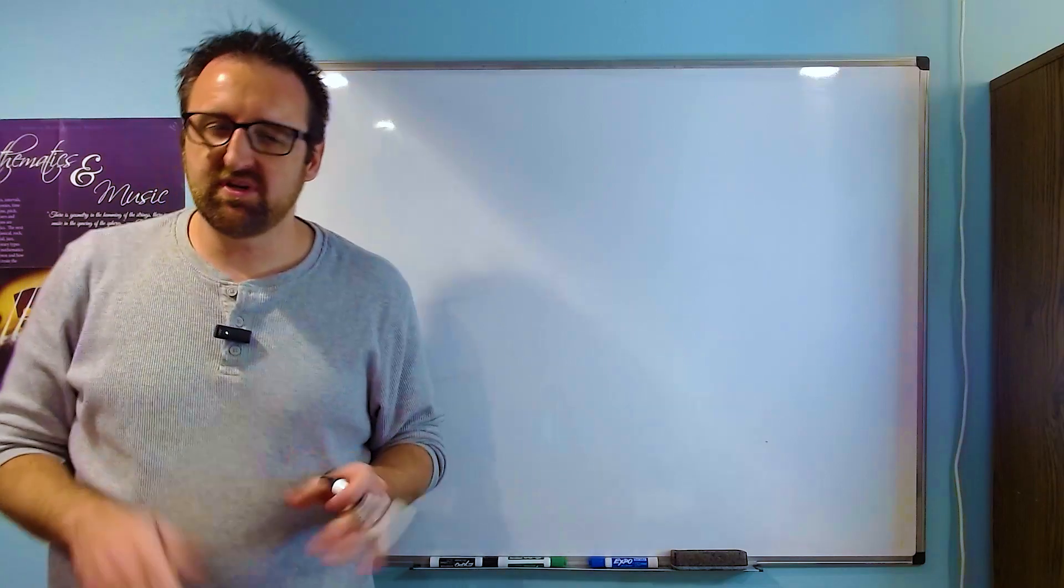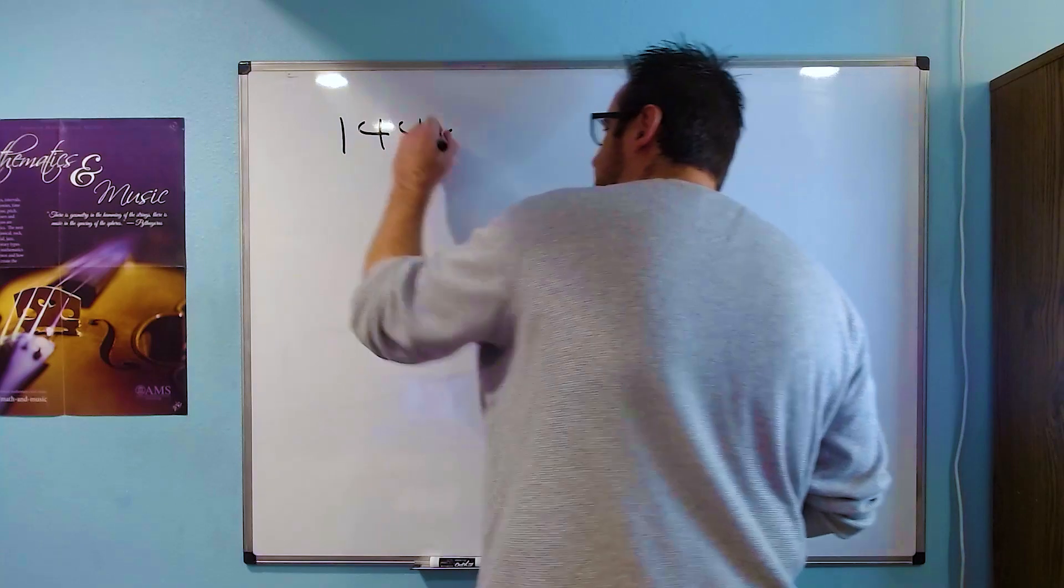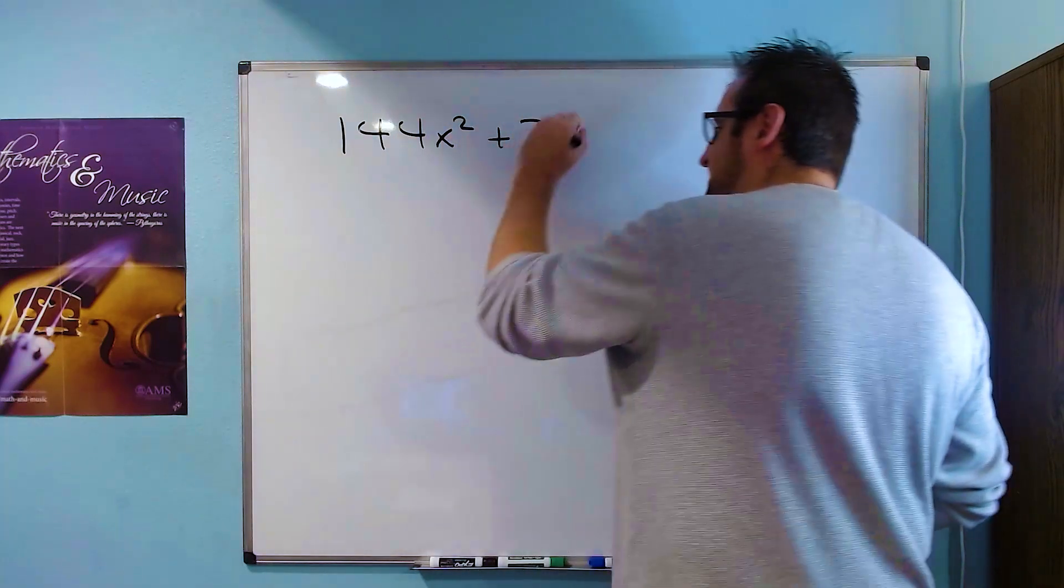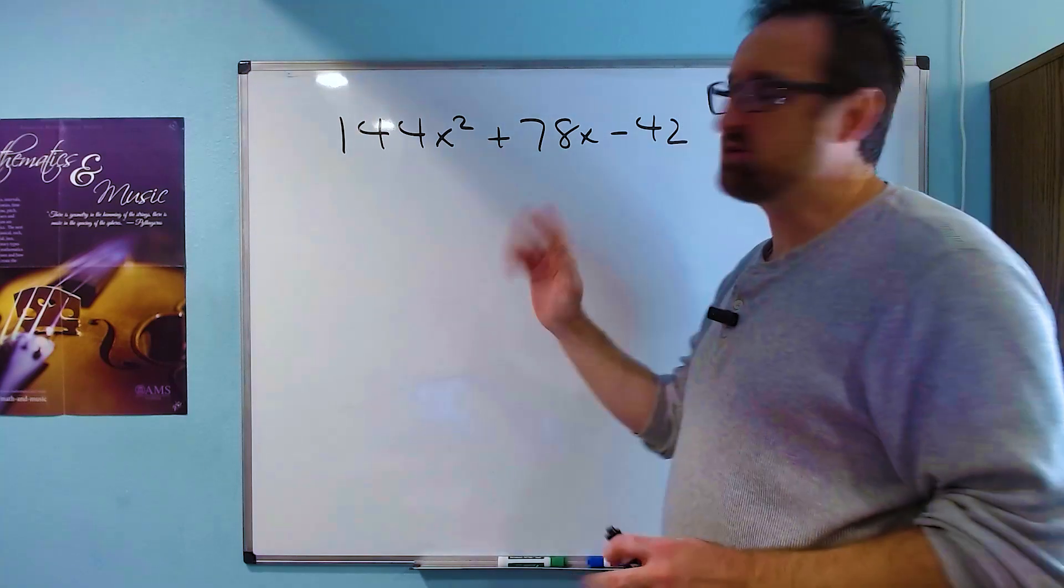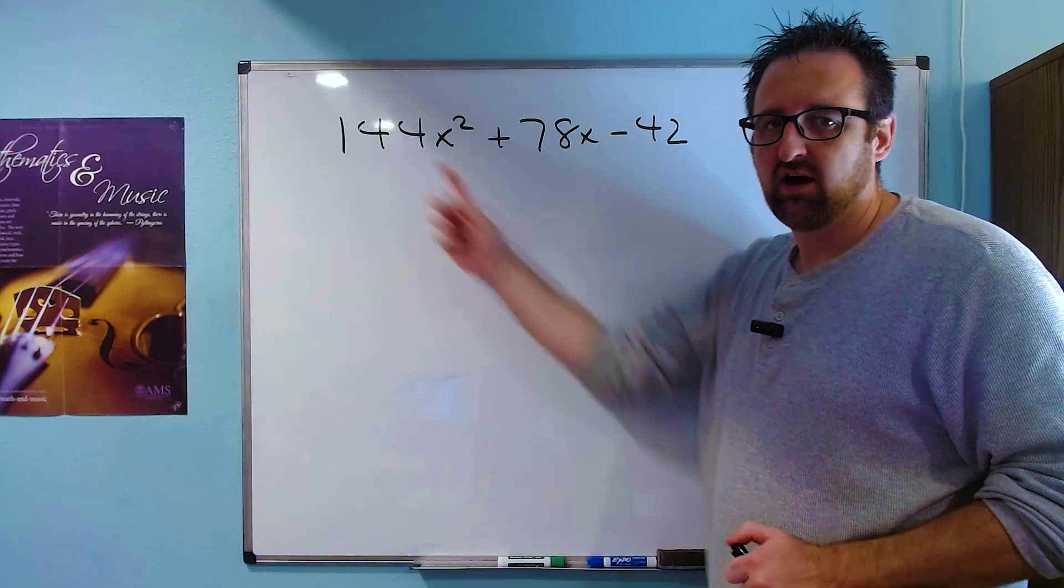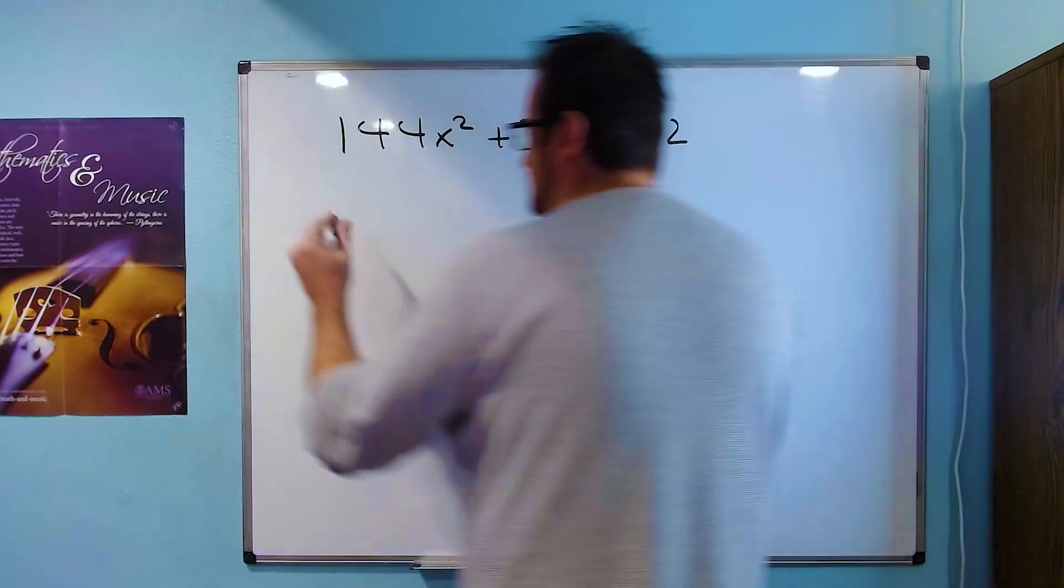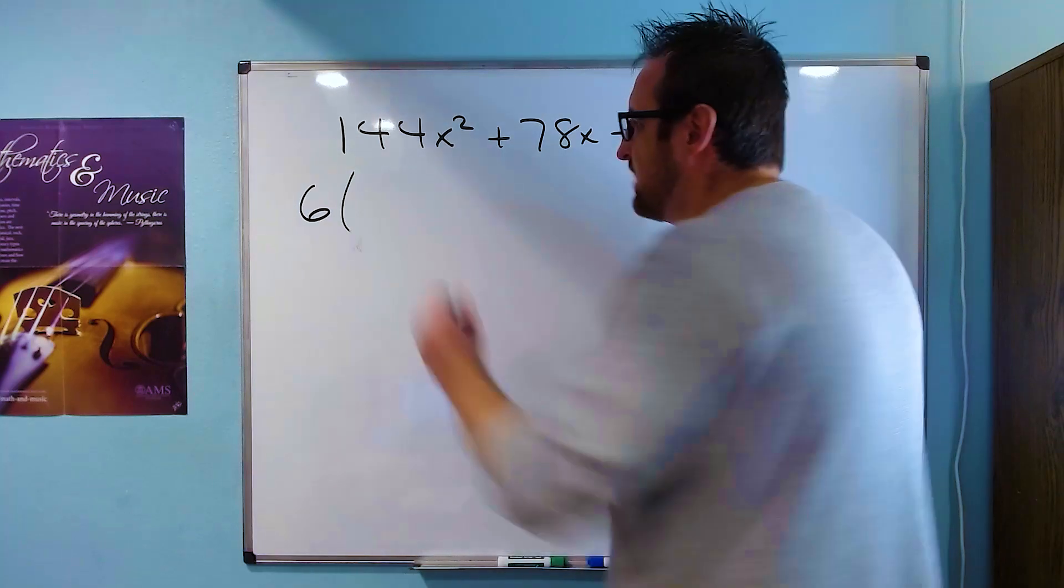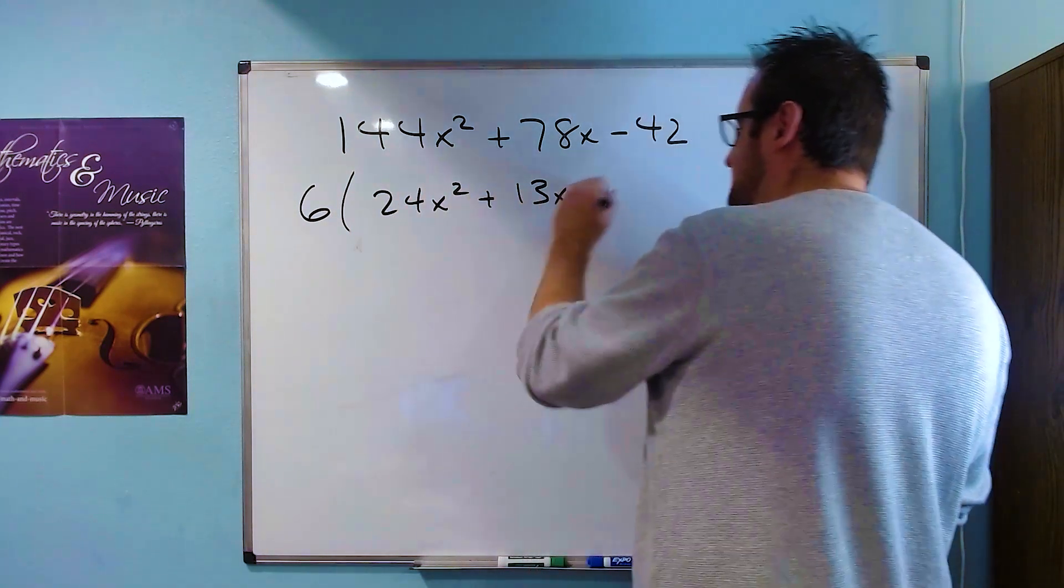Our last example is a bit of a whopper here. But again, mainly because of the arithmetic. It's 144x² + 78x - 42. So it looks a little gross, the numbers are really big. But if you notice at the beginning that all three of these are divisible by 6, we could factor a 6 out to start. If we factor a 6 out, we get 24x² + 13x - 7.